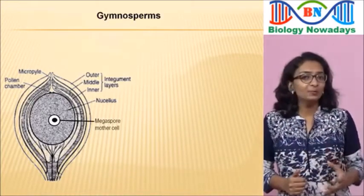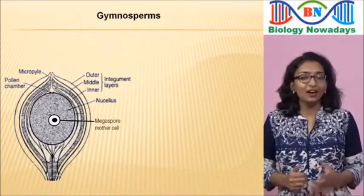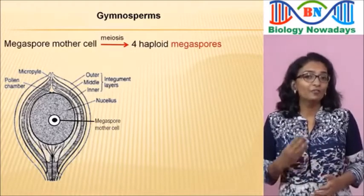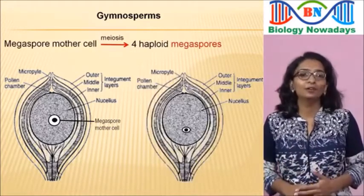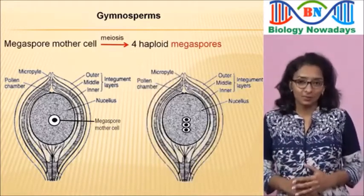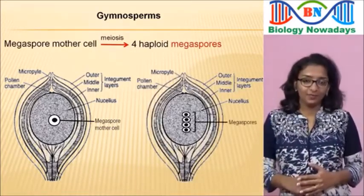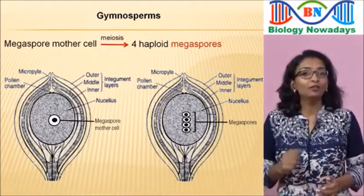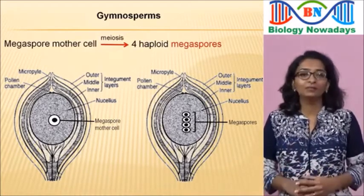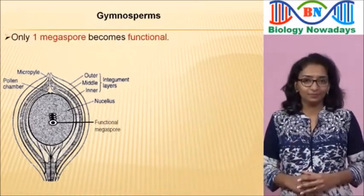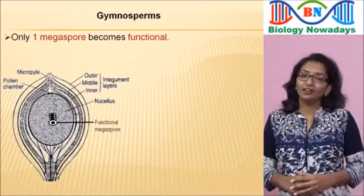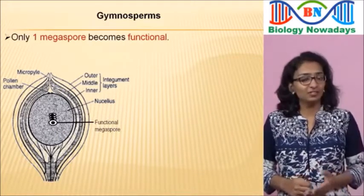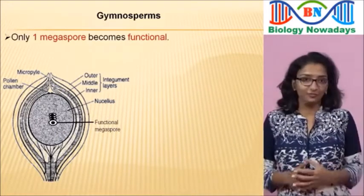The megaspore mother cell undergoes meiosis to form four haploid megaspores. Among the four haploid megaspores, only one becomes functional. The other three megaspores will degenerate — in other words, they die off.